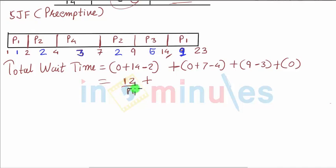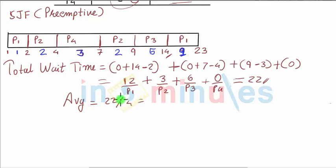So we have 12 for P1, plus 3 for P2, plus 6 for P3, and finally 0 for P4. The total comes out to be 22. If we talk about average, 22 by 4, which is 5.5 in our case.